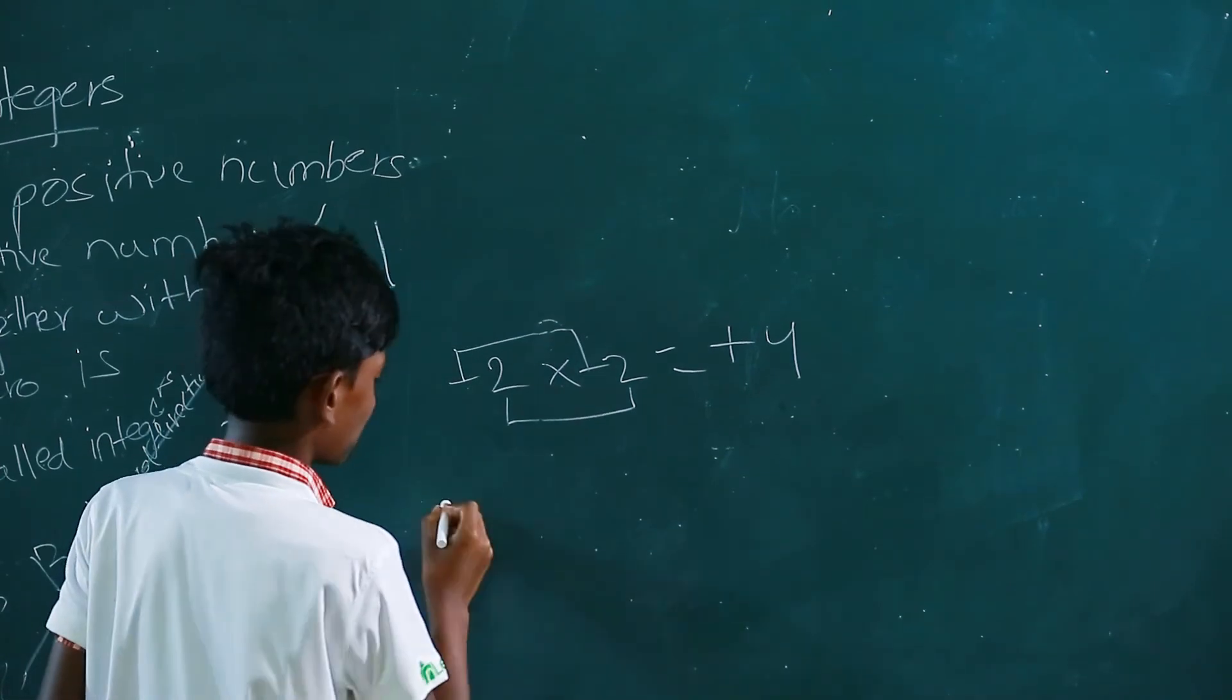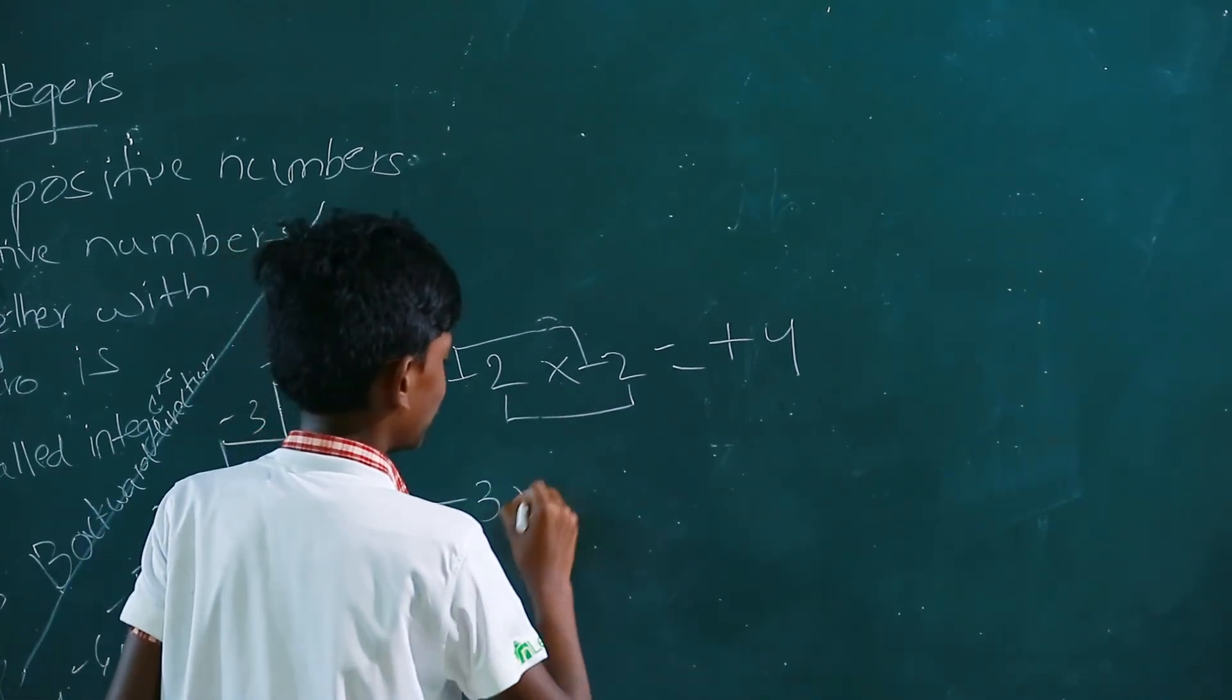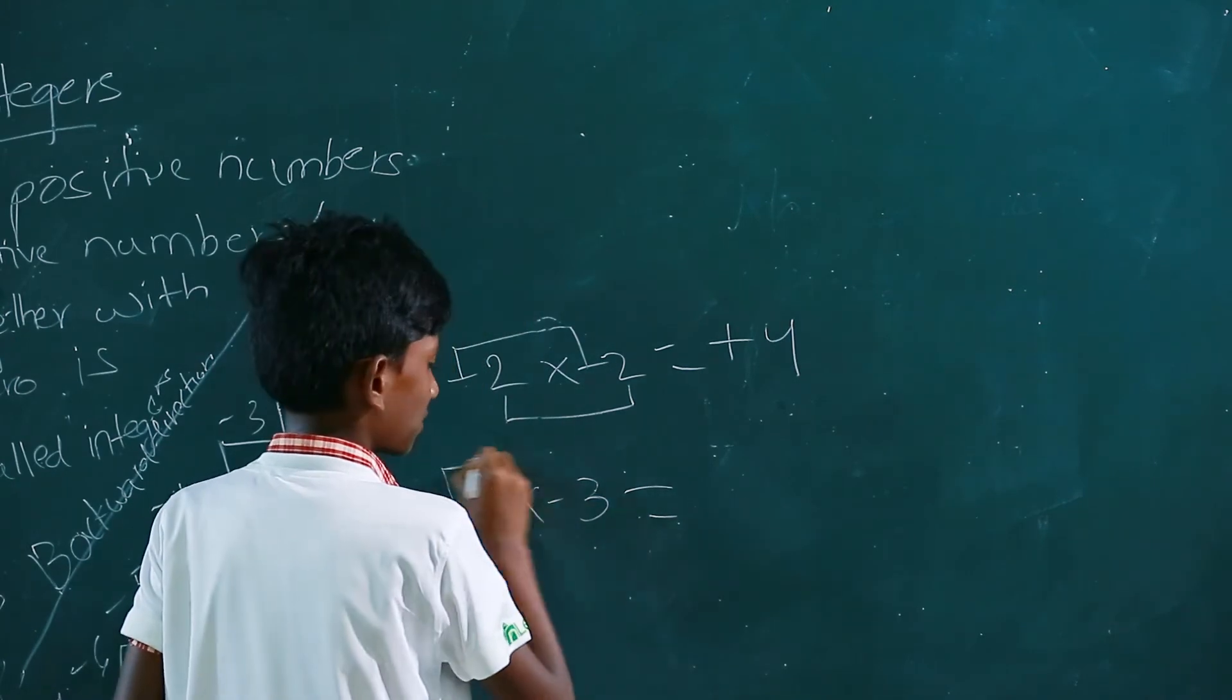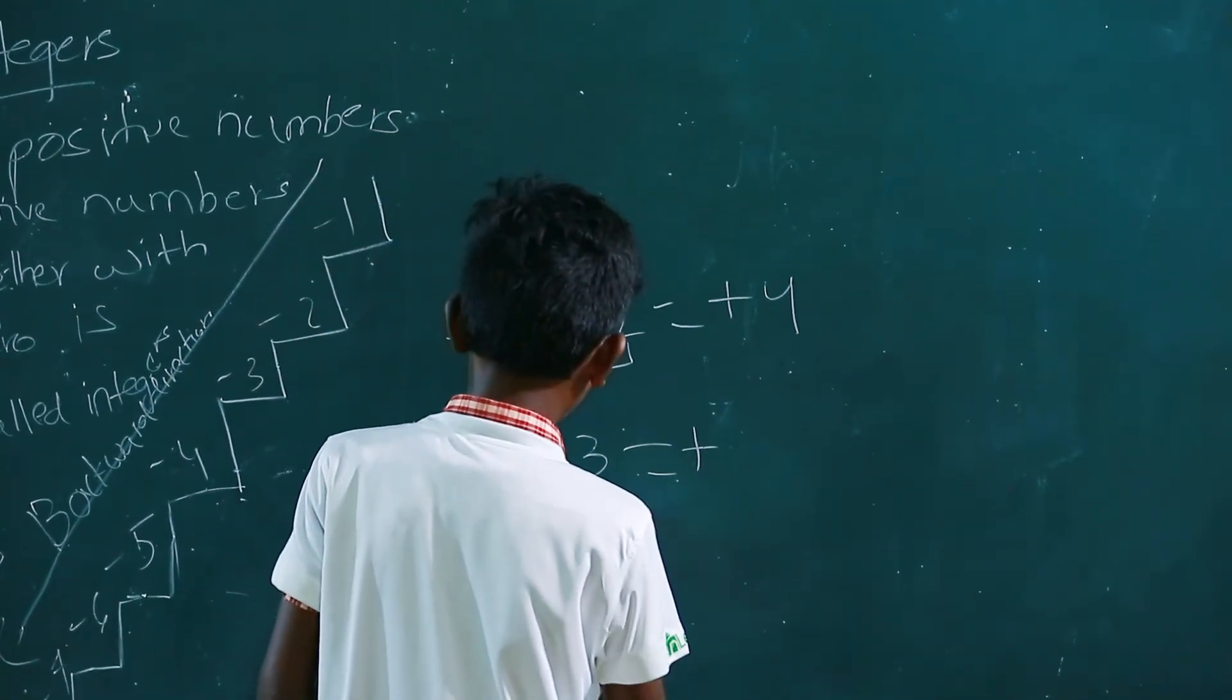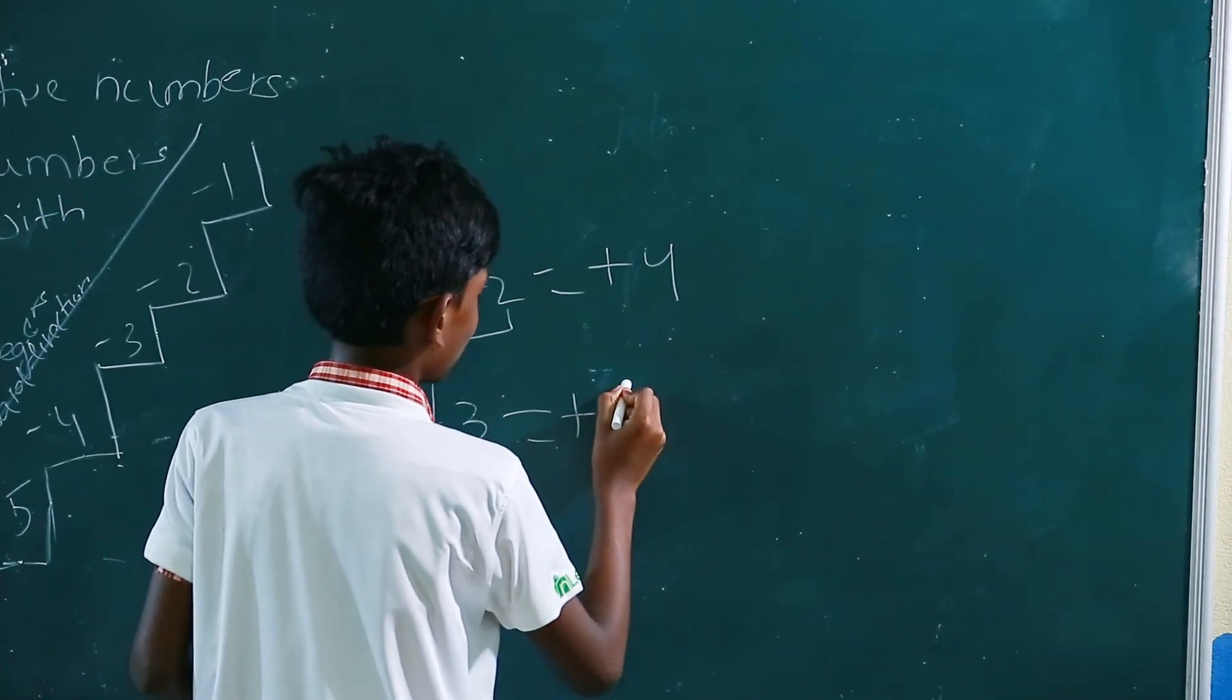Let's take another example: minus 3 into minus 3. First, we look at the symbols and numbers. Minus into minus is plus. 3 times 3 equals 9.